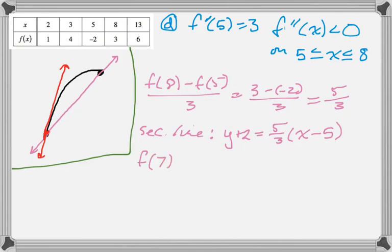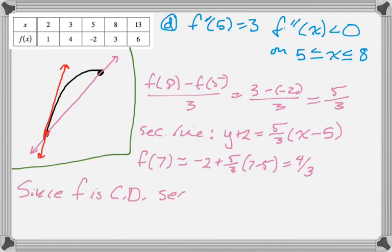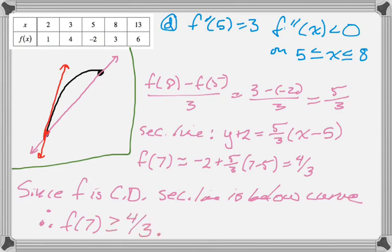Evaluate that at 7, and hopefully end up with the value that they gave us in the problem. And we do, because we got 4 thirds. And now we just write up our justification for this. So since we know that f is concave down, the secant line will be below the curve, and therefore always gives you an underestimate. Therefore, f of 7 is greater than or equal to 4 thirds. And that's how I would do it.